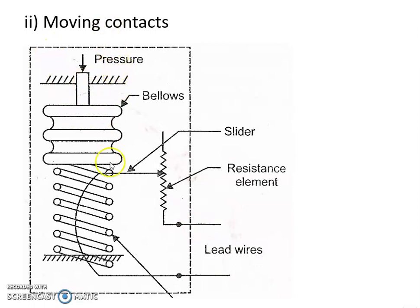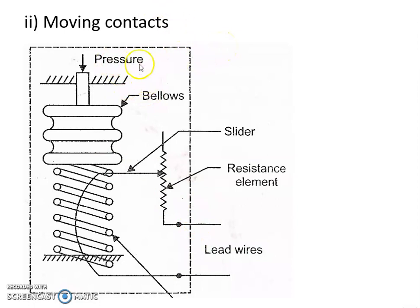As more pressure is applied, there will be more change in the resistance. In this way, the moving contact type transducer measures the applied pressure in terms of change in resistance.